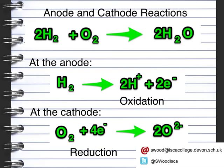An easy way of balancing the equation is to look at the electrons: we've got four electrons and two electrons. In order to get the same number of electrons, if we double one side we'd have four electrons. So if we doubled everything, we'd have four H-plus ions and two hydrogens, which is where we get our two hydrogens in the overall equation. If you go on to A-level chemistry, that is something you will be able to apply.